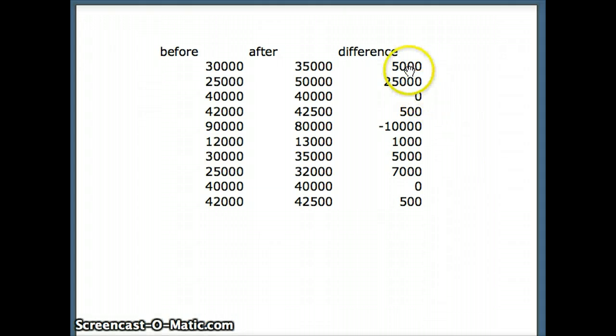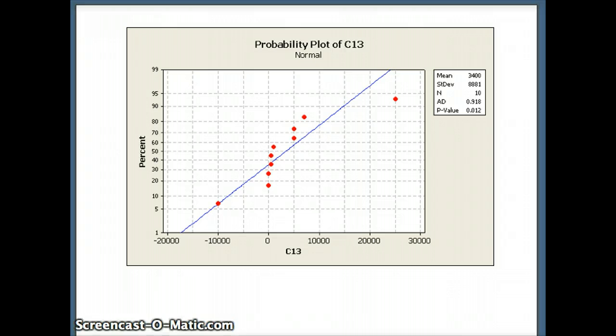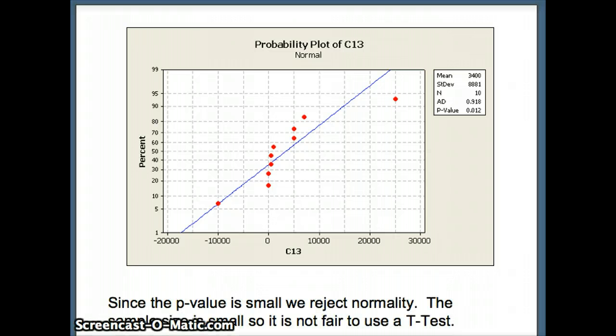But before we do anything else, we have a small number of differences. And we must check to see if those small number of differences could have come from a normal distribution. So do they? We're going to do the norm test on Minitab, and what result do we get? The result that we get here is P is 0.012. That is a small p-value. We'll use 0.05 to define small. So if the p-value is small, we reject normality, and we're not confident using the paired t-test here because the underlying data set that the differences came from may not have been normal. Therefore, it's not fair to use the one sample paired t-test. And that will conclude this presentation. Thank you.